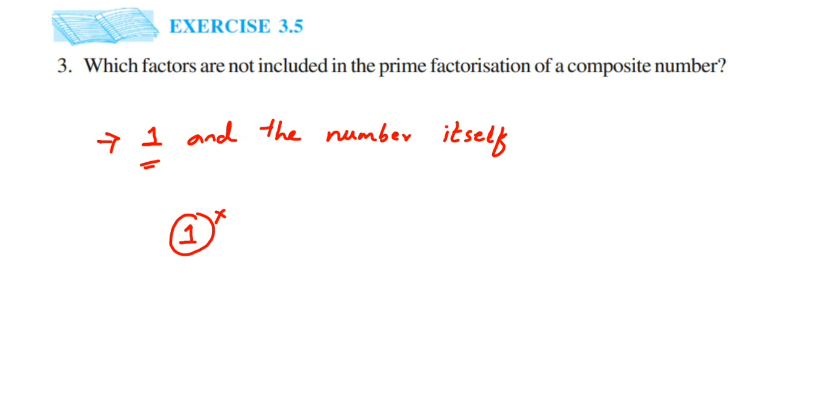One factor will be 1 and the number itself. Let's take an example of 4. If I do a prime factorization of 4—4 is a composite number, right? When I do a prime factorization, only prime numbers should be taken. So 4 can be written as 2 × 2. This is a prime factorization.